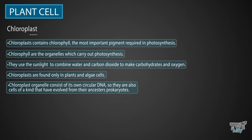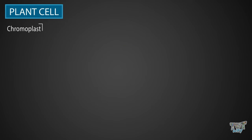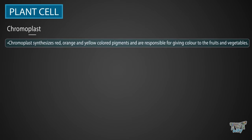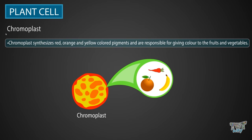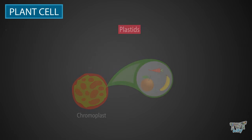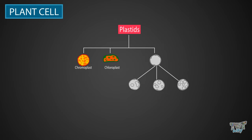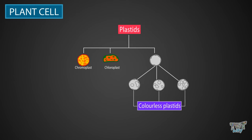Next, we have chromoplasts. Chromoplasts synthesize red, orange, and yellow colored pigments, and are responsible for giving color to the fruits and vegetables. So we have learned about two kinds of plastids. The rest of the plastids are colorless plastids, which we will learn about in our following grades.